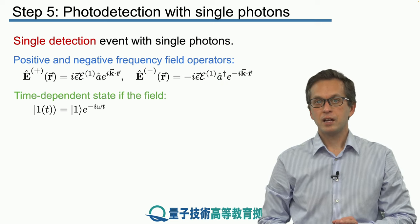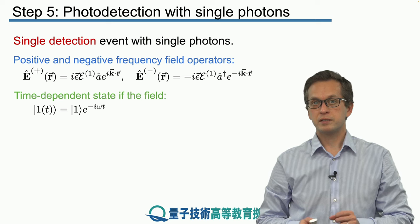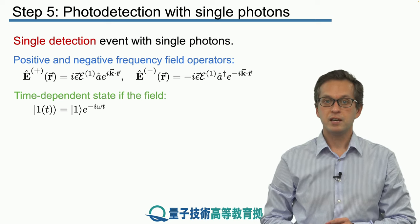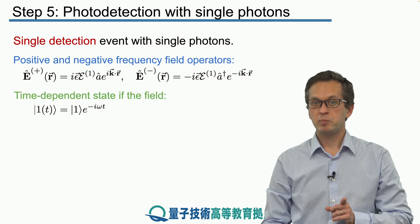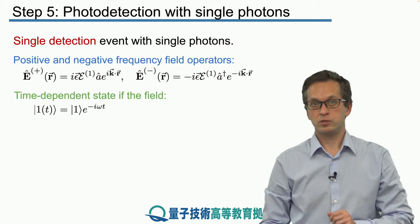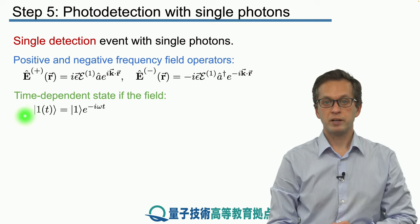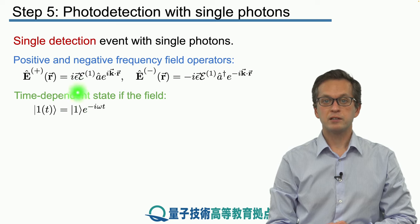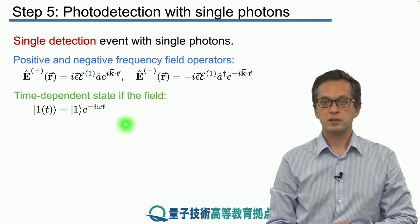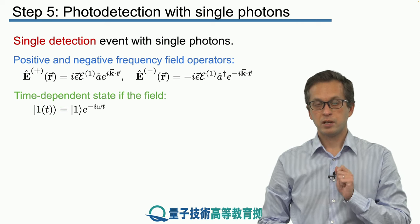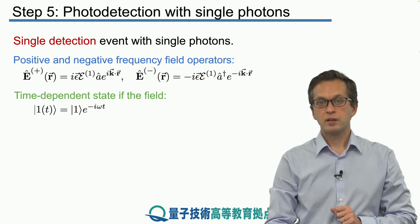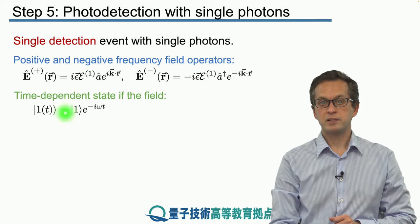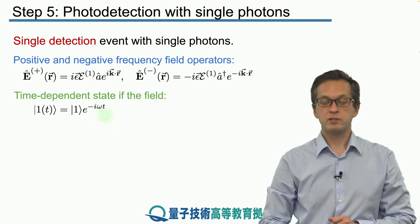And what previously we called the time-dependent state of our field, psi t, is now going to be a time-dependent single photon state of our field, denoted by 1t. And because it's just a state of a harmonic oscillator, it evolves according to this expression. So it's just the ket 1, number state 1, times this phase factor rotating at frequency omega.